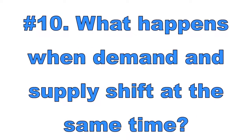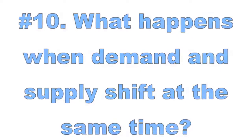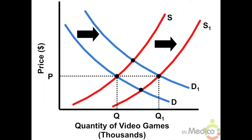Number ten: What happens when supply and demand shift at the same time? When the supply and demand curves shift at the same time, the change in market price or quantity will be indeterminate — that means it can increase, decrease, or stay the same, assuming we do not know how far each curve will shift. When supply and demand both increase or shift to the right, the equilibrium quantity will increase but market price will be indeterminate.